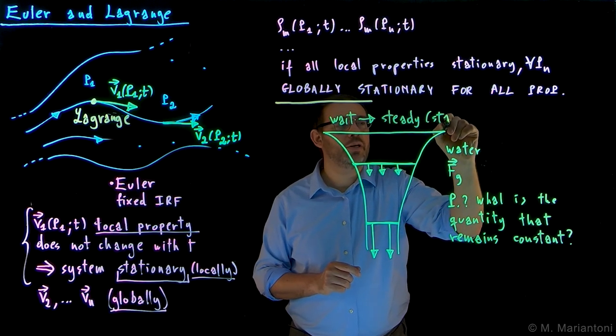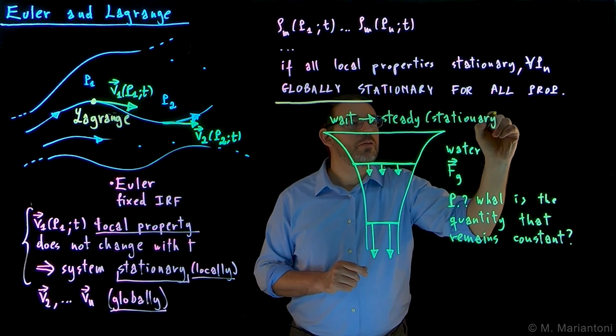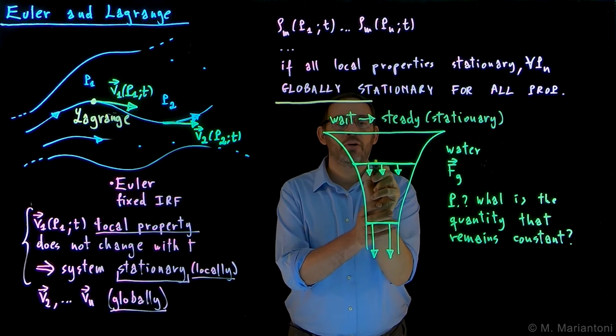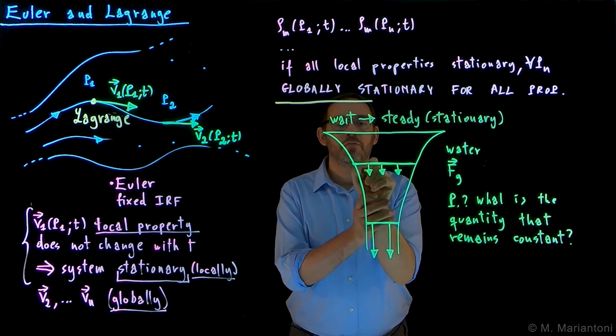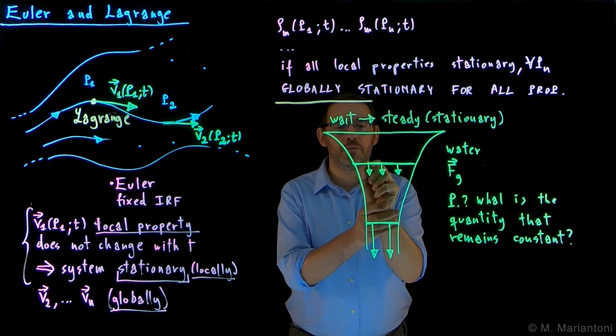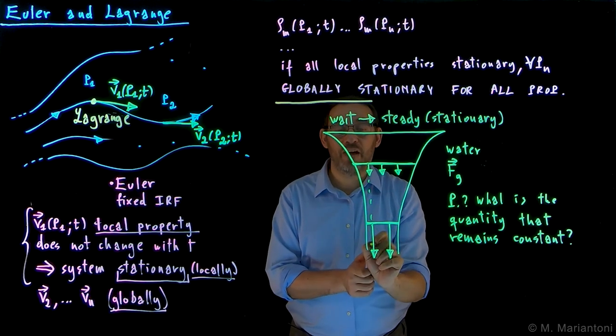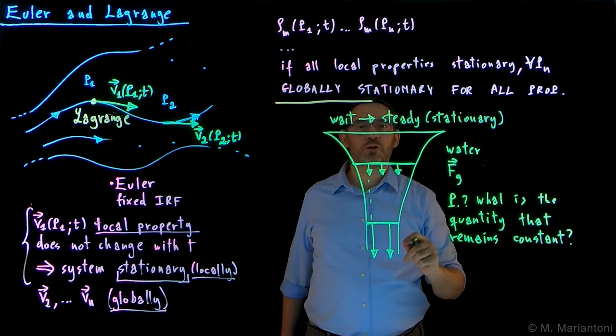Same thing, steady and stationary are synonymous. So if I look at this from the Lagrange approach, I look at these water molecules, different molecules have the same velocity, same down here. Of course, if I'm Lagrange, I follow these molecules, and when I follow it, when it goes down here, it changes velocity, it becomes faster. So what is the quantity which remains constant?